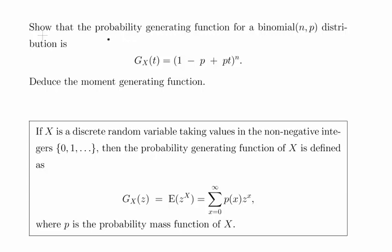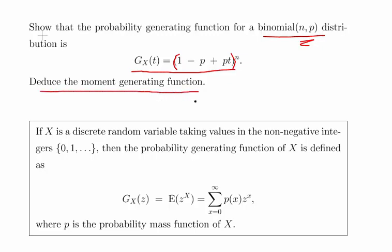In this presentation we are going to look at things like the probability generating function and the moment generating function of discrete random variables. In this instance what we are asked to do is show that the probability generating function for a binomial distribution with parameters n and p is given as g of x t equals 1 minus p plus p t, all to the power of n, and deduce the moment generating function from that.